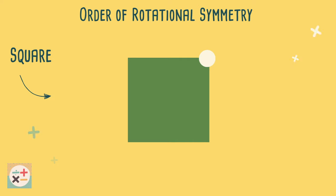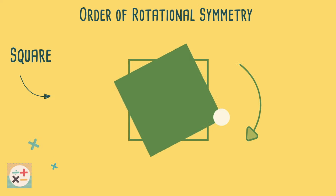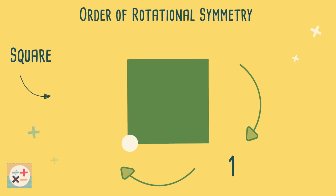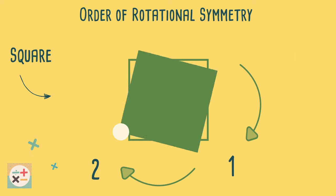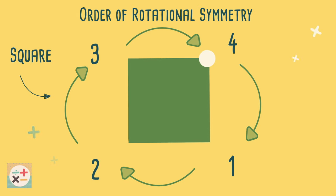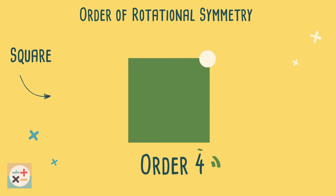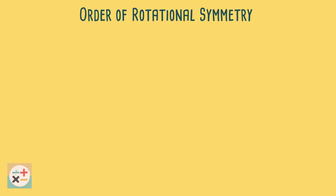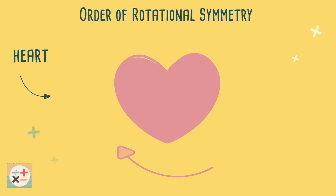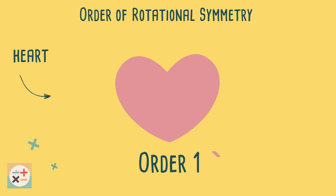As we rotate the square we can see it looks the same in four different positions when the reference point ends up back at the starting position. Therefore it has rotational symmetry of order 4. If the shape only looks the same in one position when rotated then it has no rotational symmetry — we can also say it has order 1.